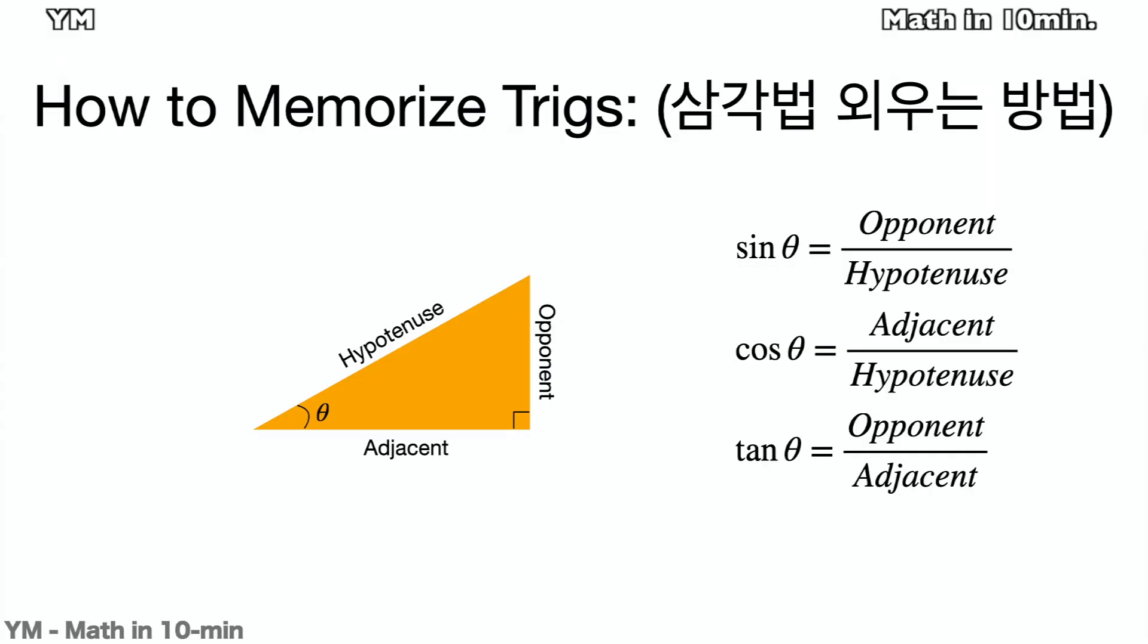Trigonometry basically starts with a right triangle. Look at the right triangle in this slide. The longest side opposite to the vertex right angle is called hypotenuse. When the side on the base is called adjacent, then the other side would be called opponent.